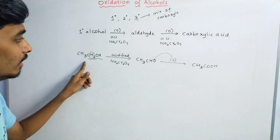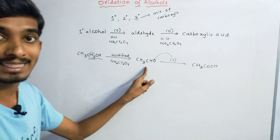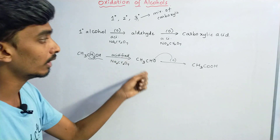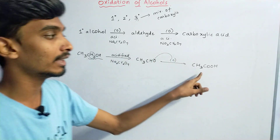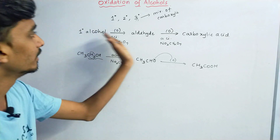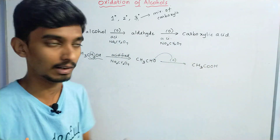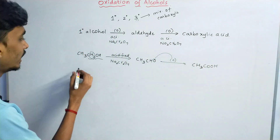On further reaction with acidified sodium dichromate, the aldehyde group (CHO) is oxidized to a carboxylic acid group (COOH), giving CH3COOH (ethanoic acid). So ethanol is oxidized first to ethanal, then to ethanoic acid.